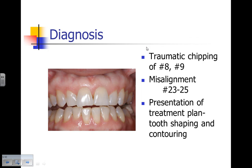For this patient, there was traumatic chipping of number 8 and 9, and there's a misalignment of number 23 to 25 that the patient is also unhappy with. Part of the treatment plan for the lower teeth is orthodontics to straighten the crowding, but the patient tells us they've had orthodontics in the past and it didn't work due to not wearing a retainer. So we presented the concept of tooth shaping and contouring and showed them the areas where we would perform the procedure.